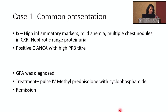There was no doubt about the diagnosis of GPA. His ANCA was positive with a very high PR3 titer, and GPA was diagnosed and treated with IV methylprednisolone and cyclophosphamide pulse. He went into remission, and remission was maintained with azathioprine. This was very easy to diagnose and treat — not complicated at all.